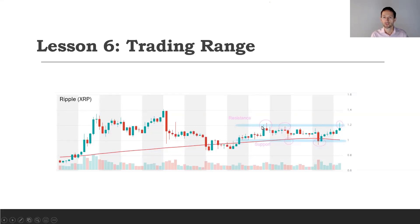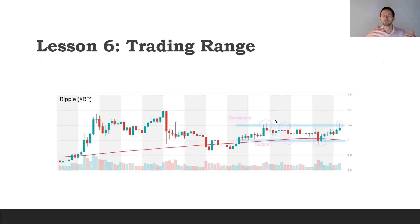To consider this a trading range we need a couple of touches on the resistance level. We identify support and resistance by connecting swing highs and swing lows. When multiple lows line up at a horizontal level and the price bounces multiple times, that creates a support level. The resistance level in this case is $1.20, where there's not enough buying to push above, selling ensues, and the price dips back down. Two touches on top and two on the bottom establishes the range.